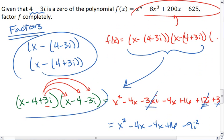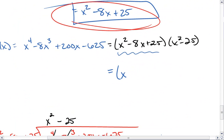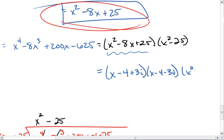So we get x squared, which we can write as this if we want to. So we get x minus 4 plus 3i, x minus 4 minus 3i times x squared minus 25.